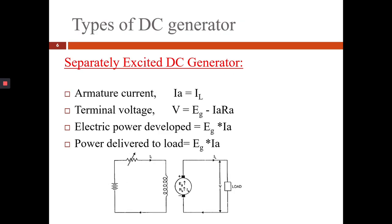Now we will see types of DC generator. Separately excited DC generator. In case of separately excited DC generator, the excitation of the DC generator is given separately. Here the armature current IA equals IL and terminal voltage V equals EG minus IARA and the electric power developed equals EG into IA and the power delivered to load equals EG into IA.